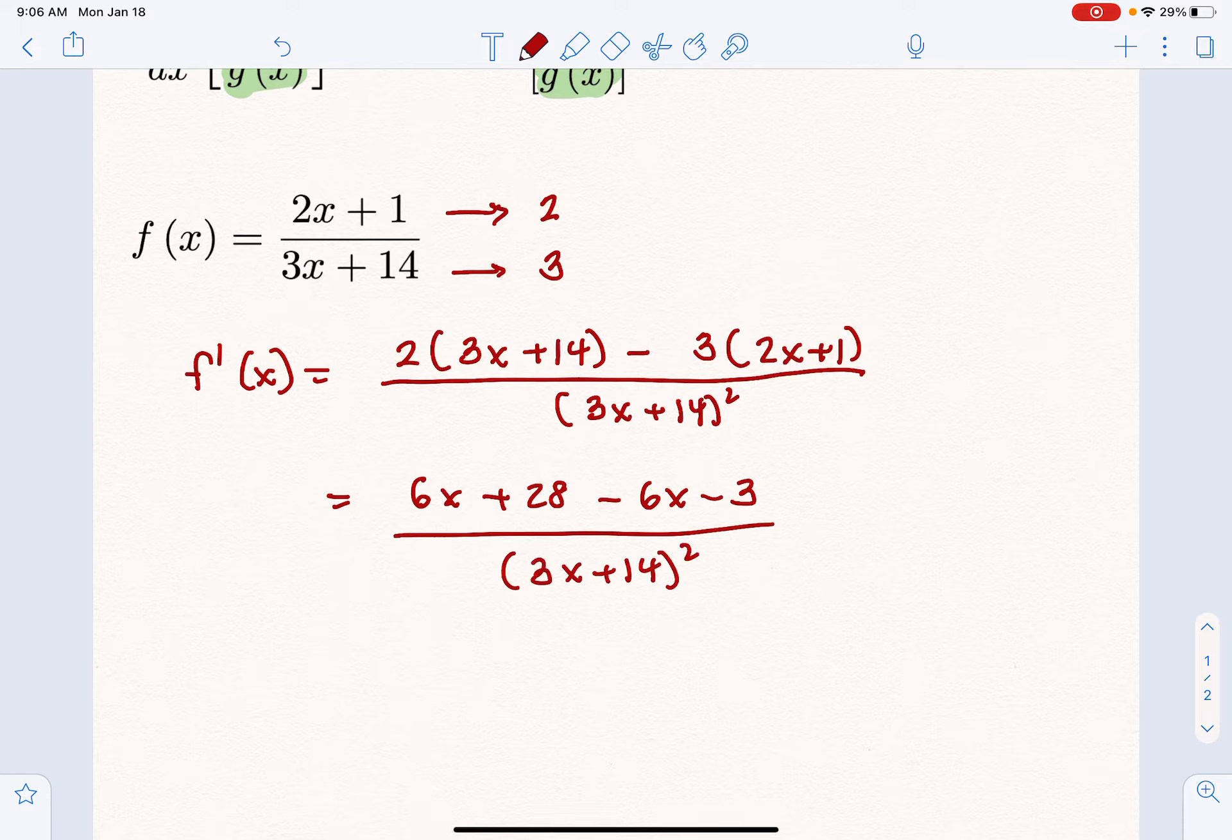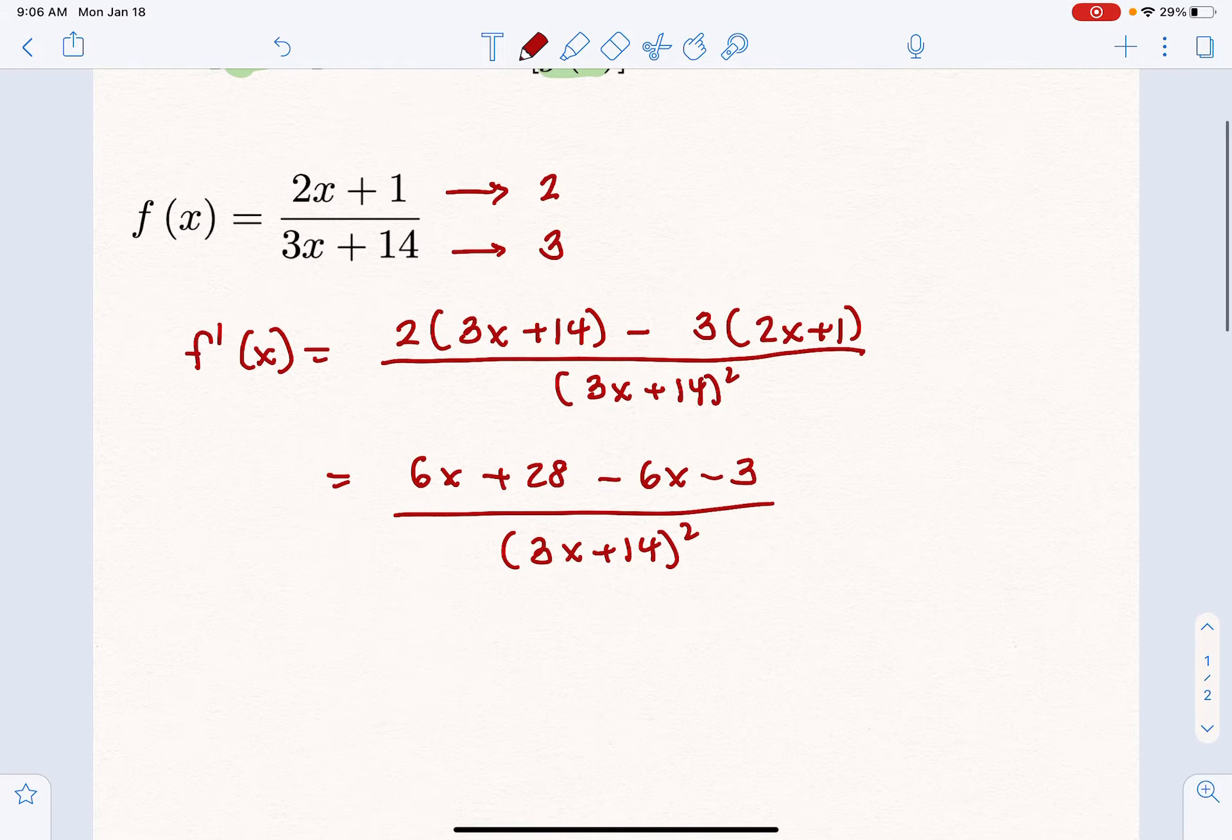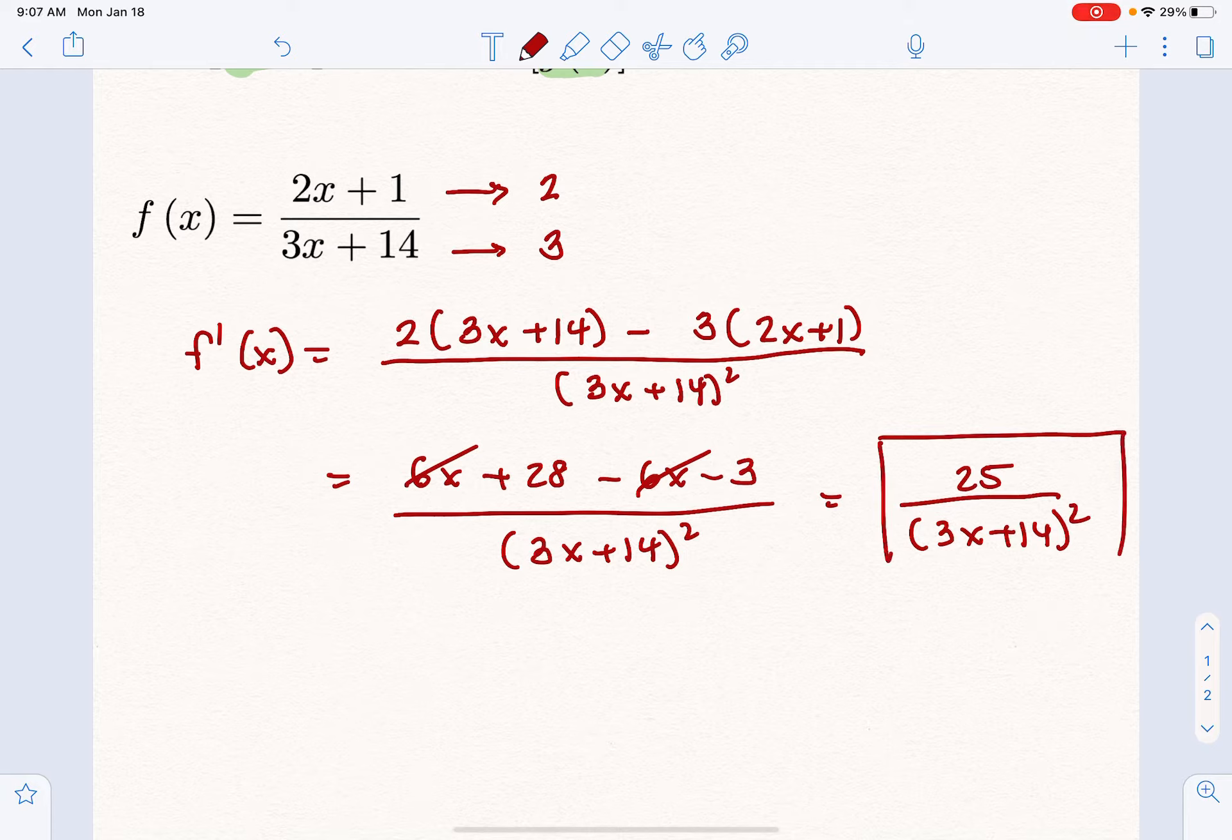Notice I'm not multiplying out the denominator—it's going to get us nowhere. But with the numerator being the way it is, not completely factored or completely multiplied out, we just take the road of multiplying it out. The 6x's cross out, and we end up with 25 over (3x + 14)². That's as good as it gets. That is the formula for the derivative of that function.